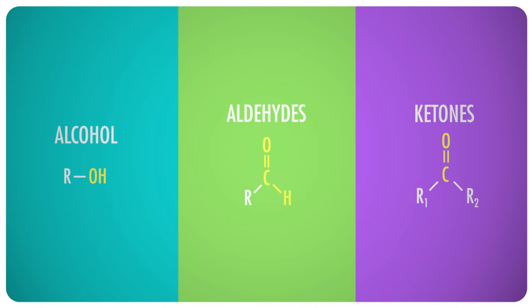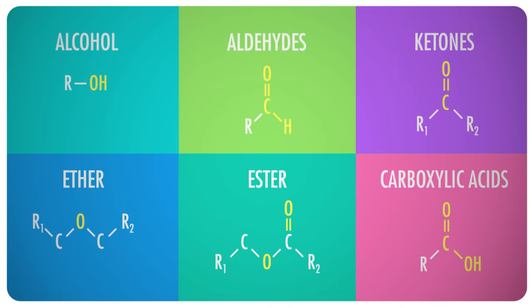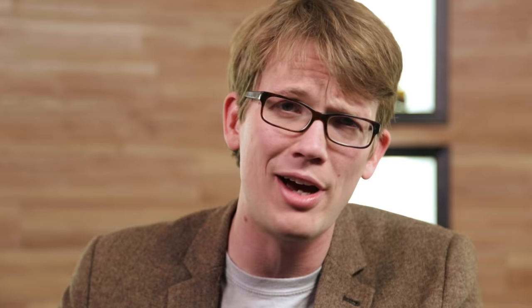In fact, if you look at all these oxygen-based functional groups, you'll see that they're all very closely related. Aldehydes are just dehydrogenated alcohols, ketones are just aldehydes bonded to R groups on both sides instead of a hydrogen on one side, while carboxylic acids are ketones bonded to an OH group instead of an R group, and ethers are just alcohols bonded to an R group instead of a hydrogen.